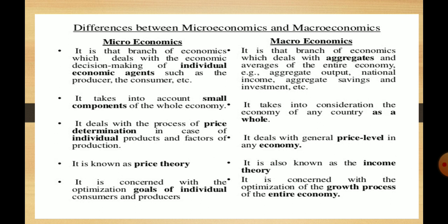That is why microeconomics is known as price theory. On the other hand, macroeconomics is related to determining the income and employment level of an economy — where we can strike the full employment level — that is why it is known as income theory. Microeconomics is concerned with the optimization goals of individual consumers and producers, while macroeconomics is concerned with the optimization of the growth process of the entire economy.